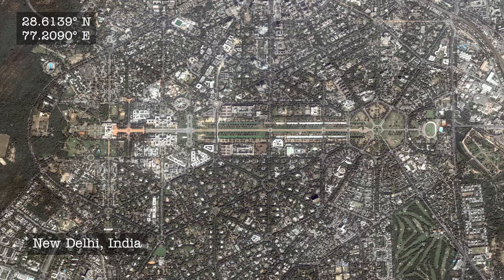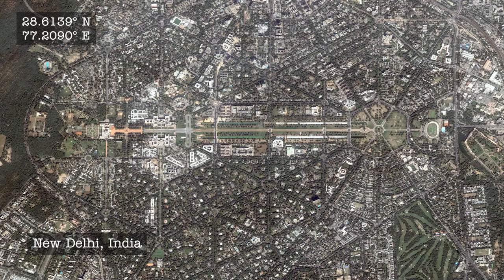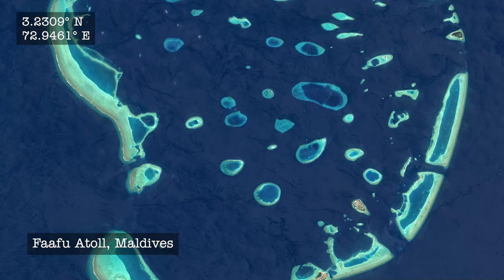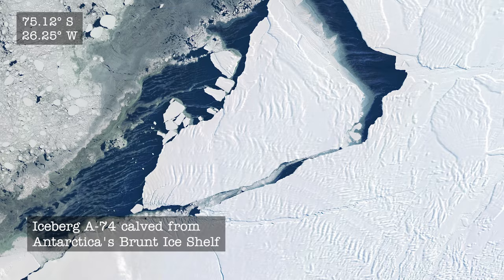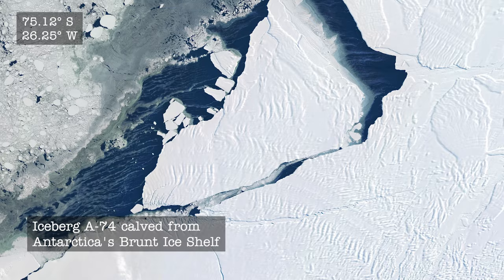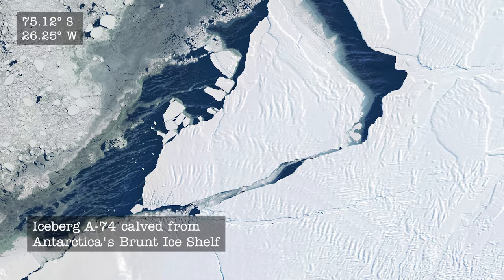Whether you're looking out the window of an airplane or you're looking at a satellite image, try to look at it in a different way. Try to look at patterns you might not have noticed before. Look for what you don't see — is there something missing that you would expect to see there? Just try and look with a different eye, and I think you'll be pretty surprised.